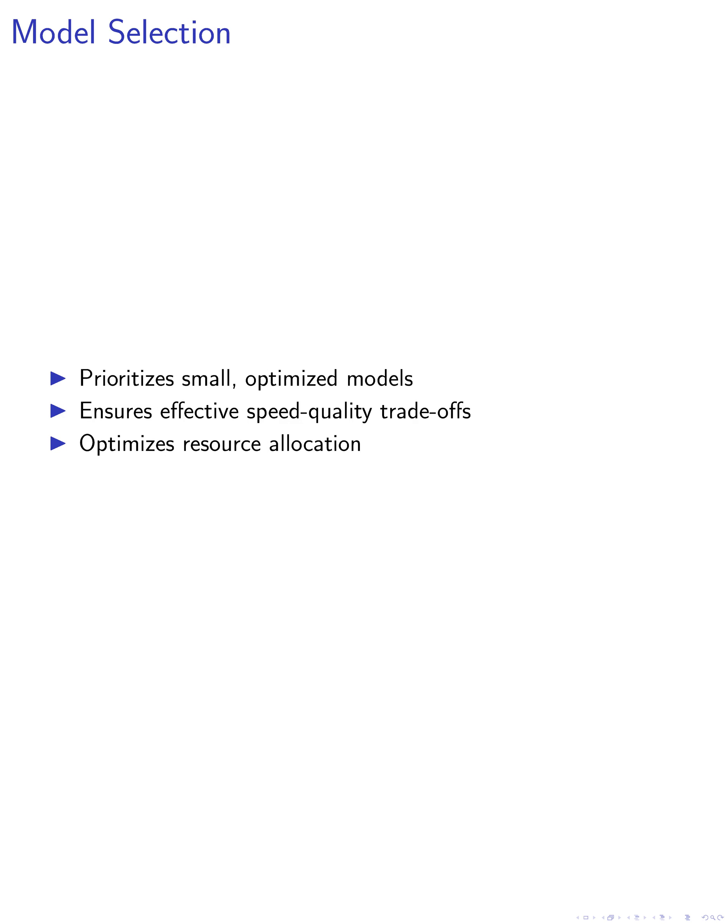In summary, our work on trajectory stitching, T-Stitch, presents a comprehensive framework for improving the efficiency and quality of diffusion models. Through innovative strategies such as pairwise model allocation, the inclusion of multiple denoisers, principled model selection, and classifier-free guidance, we offer a robust solution to the challenges of balancing speed and quality in diffusion model sampling. Our findings demonstrate the potential of T-Stitch to significantly advance the field of generative modeling, providing a scalable and flexible approach to optimizing diffusion models for a wide range of applications.